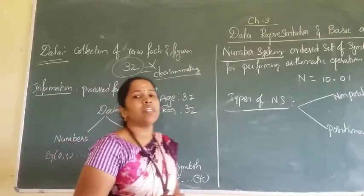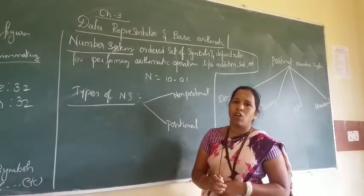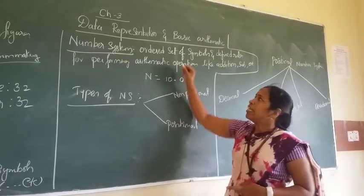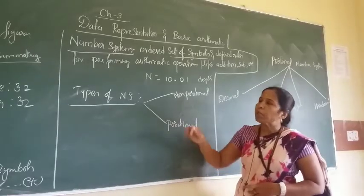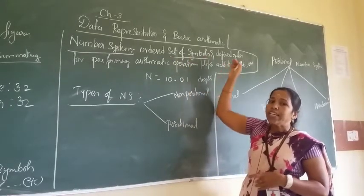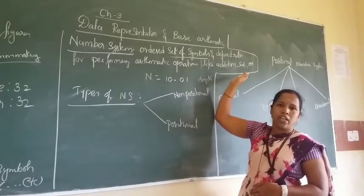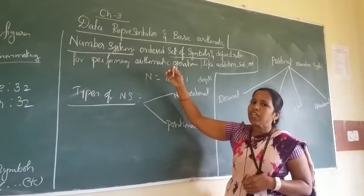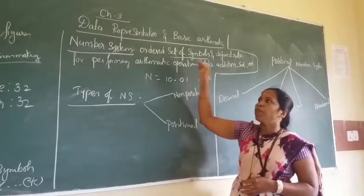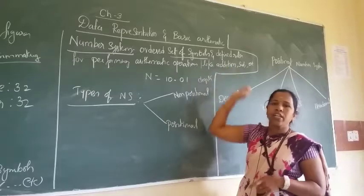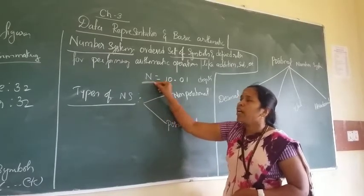When you come to the number system, what is a number system? A number system is a set of symbols — those symbols are known as digits — along with defined rules. Those rules are used for performing arithmetic operations such as addition, subtraction, multiplication, and division. This group of symbols is represented as a number.